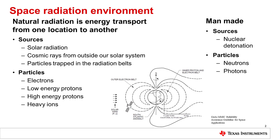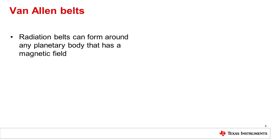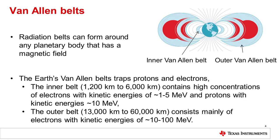This video will focus on the natural radiation sources. Radiation belts can form around any planetary body that has a magnetic field. In fact, many planets in our solar system have radiation belts — some are weak and some are very strong. The Earth's radiation fields are called the Van Allen belts, and they trap passing protons and electrons, centered at the equator of the Earth where our magnetic field is the strongest. The inner belts contain higher concentrations of protons and heavy ions, and the outer belt consists mainly of electrons, and that belt can fluctuate dramatically in response to solar activity.